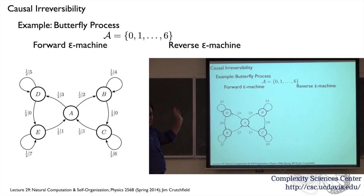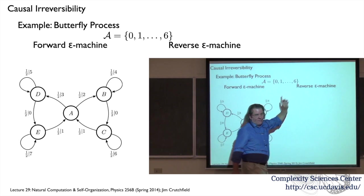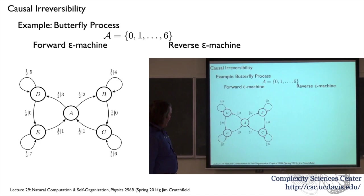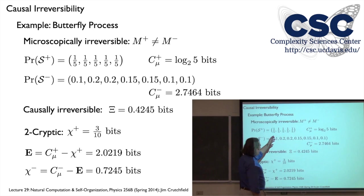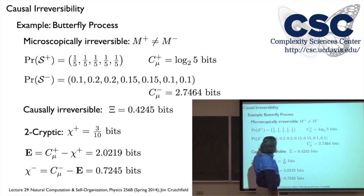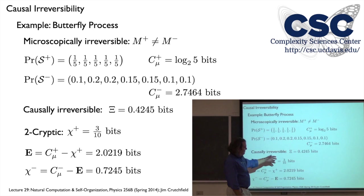The butterfly process is something we call 2-cryptic: 2 is the order — the number of steps you have to go backwards from your forward causal state to start doing good retrodiction. The forward crypticity is about 0.3 bits. If I know the statistical complexities, I can calculate E because the crypticity is the difference between them. If I calculate the crypticity, I subtract that off and get an analytical estimate of E. From that, since the reverse crypticity is the difference between the reverse state information and E, the reverse crypticity is about 0.7 bits. All these things are related.